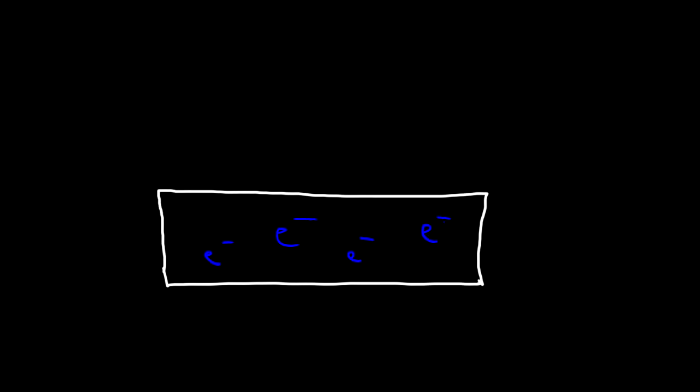It's important to understand that inside a metal crystal, the electrons are moving randomly. Their motion is not consistent — they're not moving in one direction. This electron might be moving to the left, this one down, this one in another direction. So there is no net flow; the motion is completely random. They're moving pretty fast, but they're not getting anywhere.